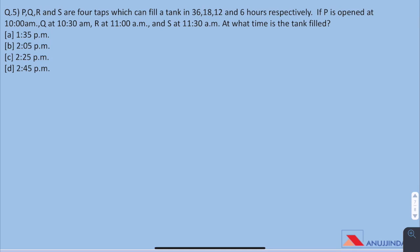Question 5. P, Q, R and S are 4 taps which can fill a tank in 36, 18, 12 and 6 hours respectively. If P is opened at 10 am, Q at 10.30, R at 11 am and S at 11.30 am, at what time is the tank filled? In such questions, we first take the LCM of the given 36, 18, 12 and 6 which comes out to be 36. So, let us assume the capacity of tank is 36 units.